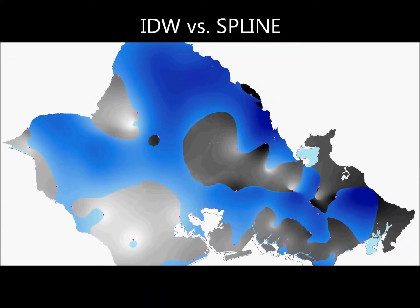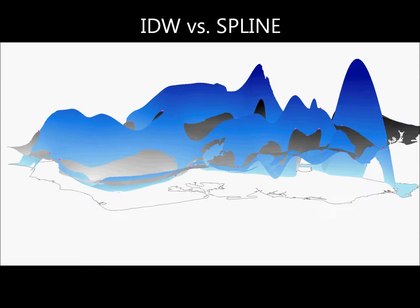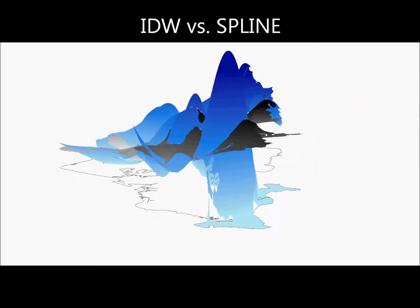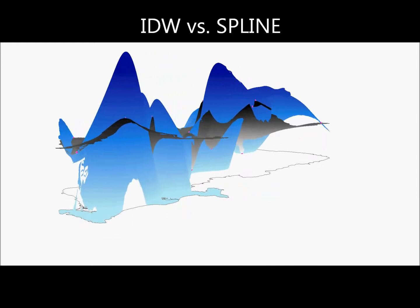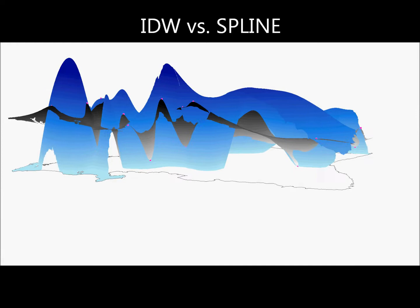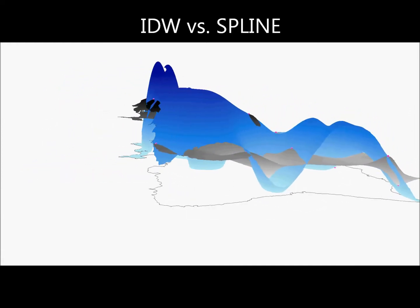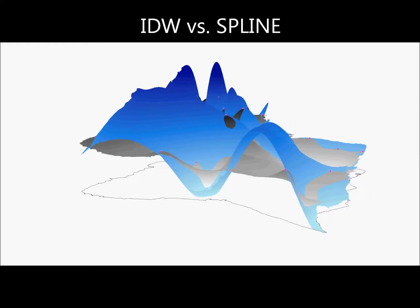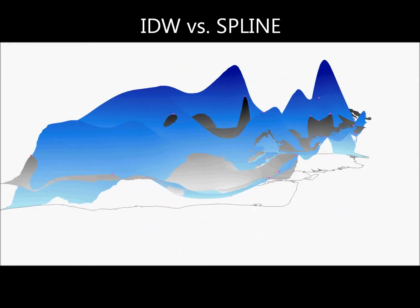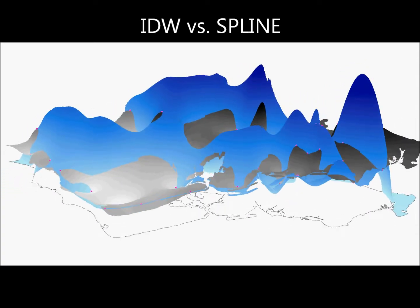The spline interpolation, seen in blue, has exaggerated high and low values outside the range of IDW values. In essence, this is the rubberized sheet accounting for possible values outside of the range of those collected. The pink station values intersect the spline, but are not found at its peaks or at its valleys. These peaks and valleys may or may not be accurate, and further field measurements would need to be acquired to confirm the correctness of the interpolated values.